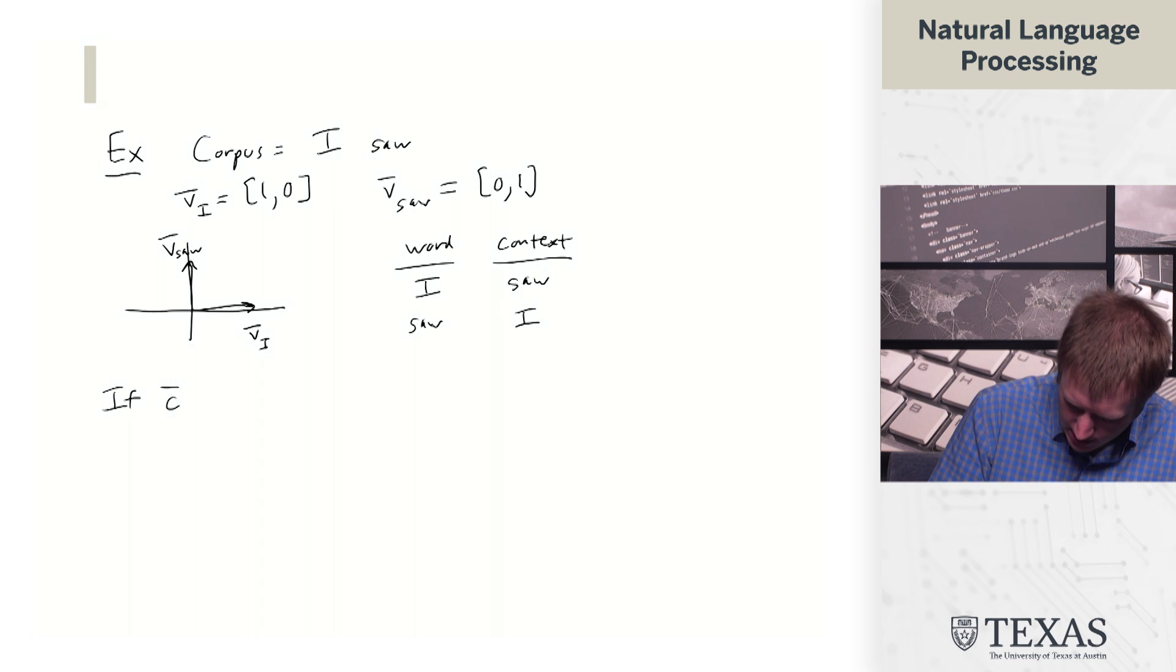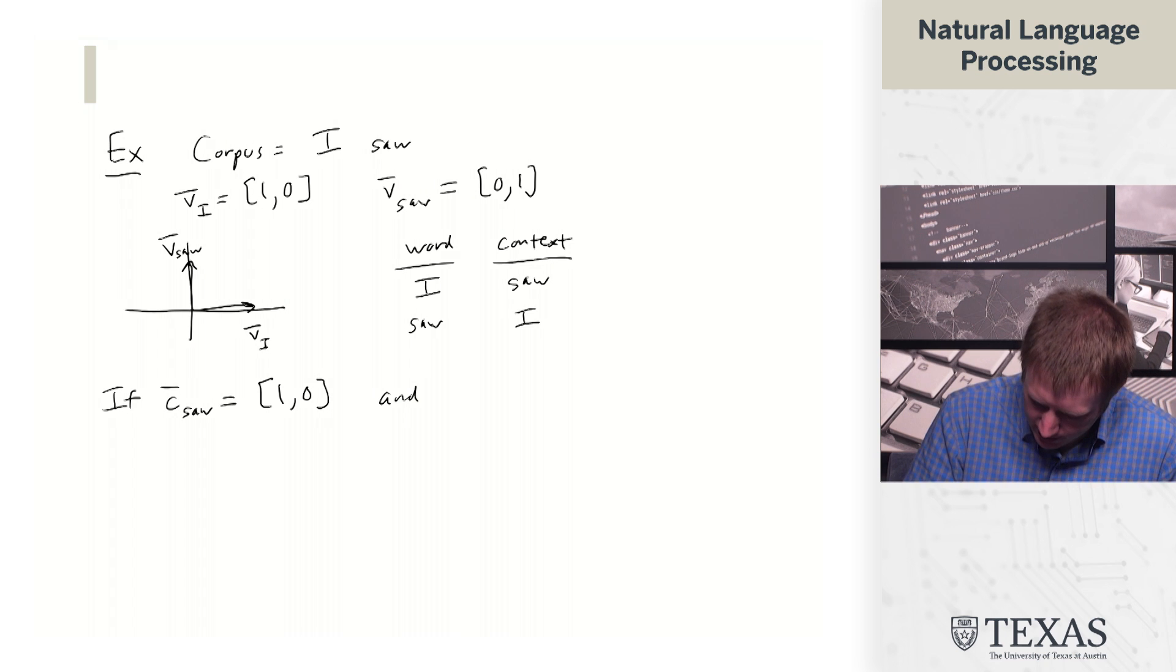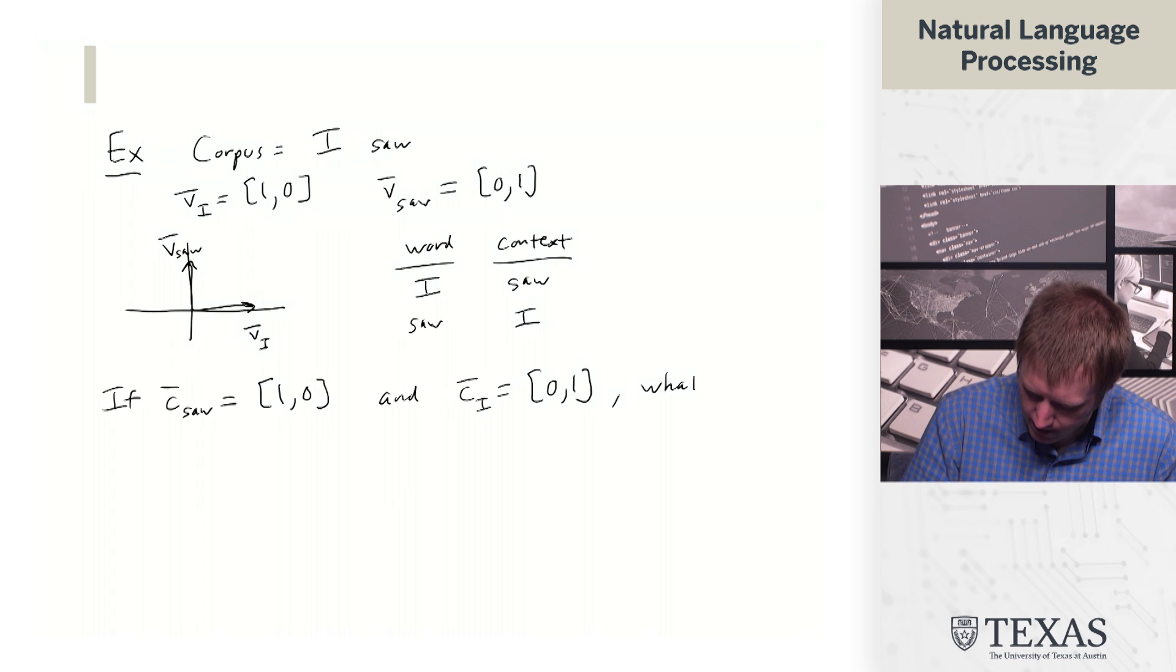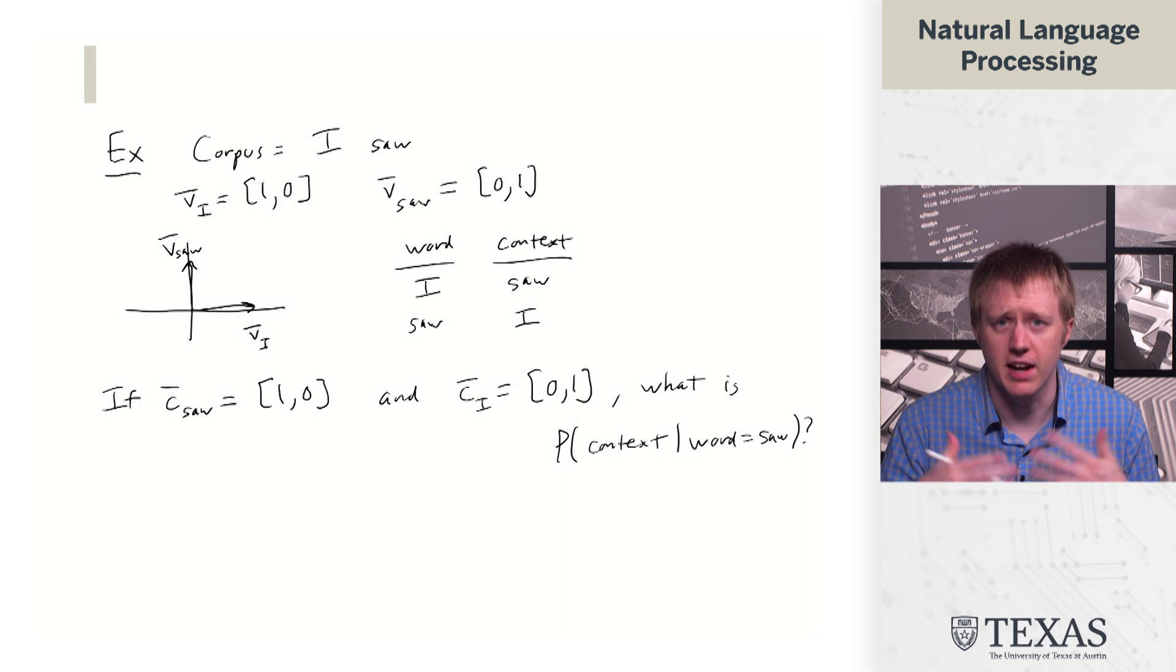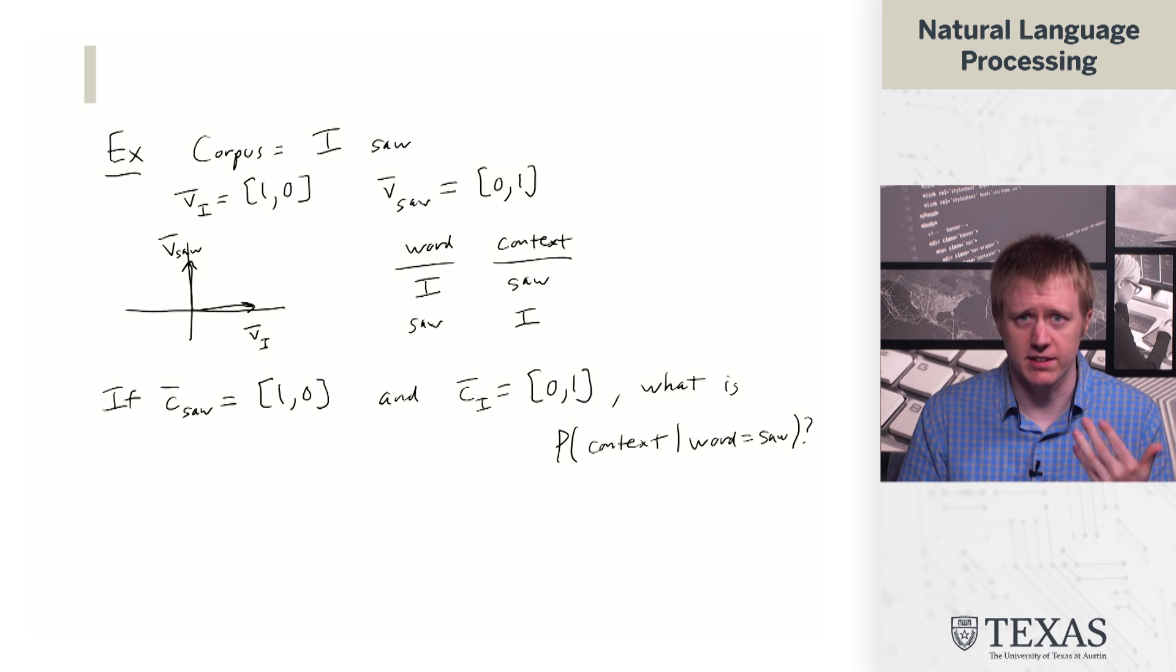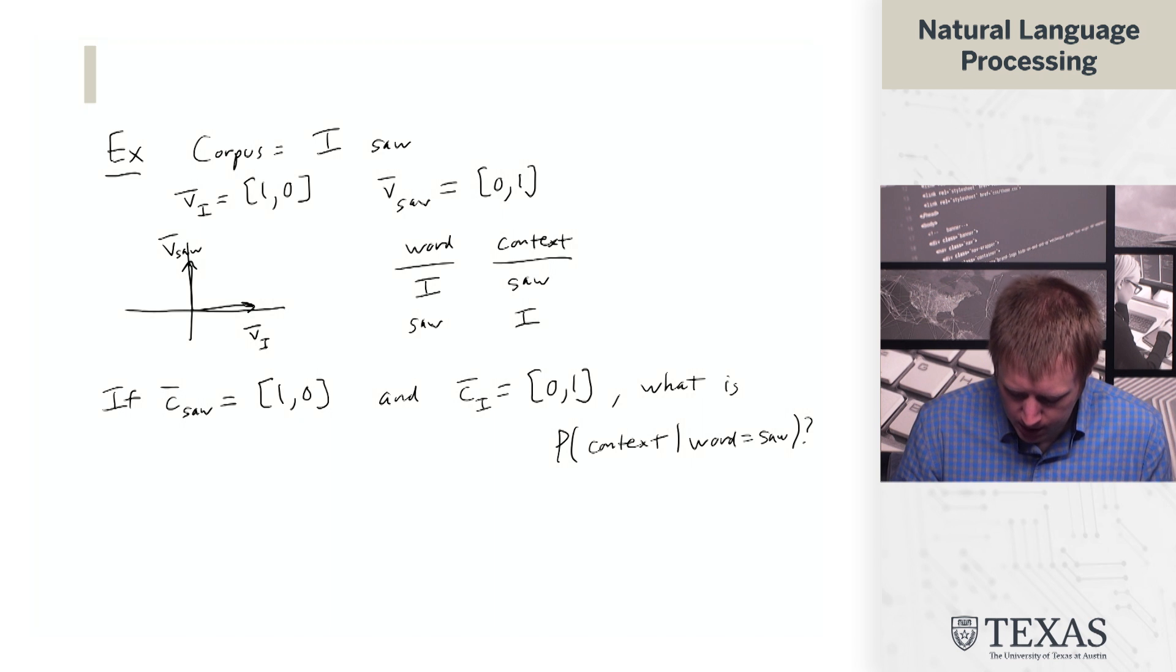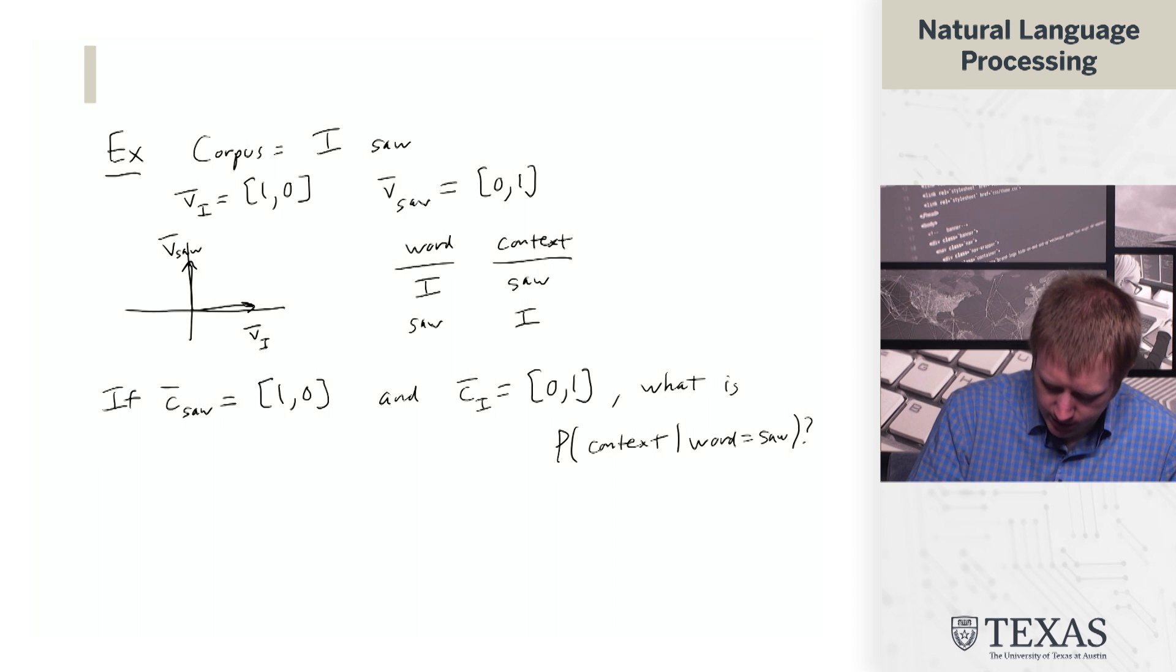The first thing we can do to just kind of understand a little bit more here. If C saw is 1, 0, and CI is 0, 1, what is P of context given? And then, the word is saw. So just to understand kind of what's going on here. What we are saying is that C saw is going to be over here at the same place as VI. And then CI is going to be up here. I'm drawing them not totally on top of each other, but they are.